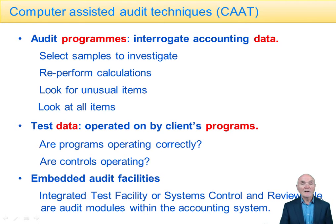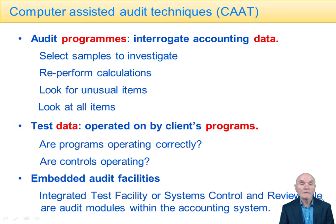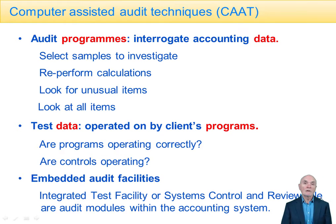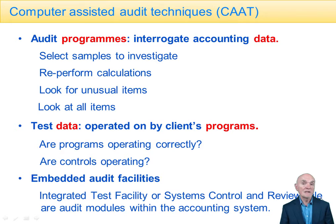It can take a huge amount of human endeavor out of it — making it much faster, cheaper, and potentially more accurate. It can also re-perform calculations. Think about depreciation. You're probably used to doing accounting problems where the cost is 100,000 and the depreciation rate is 25%, so the depreciation charge is going to be 25,000.